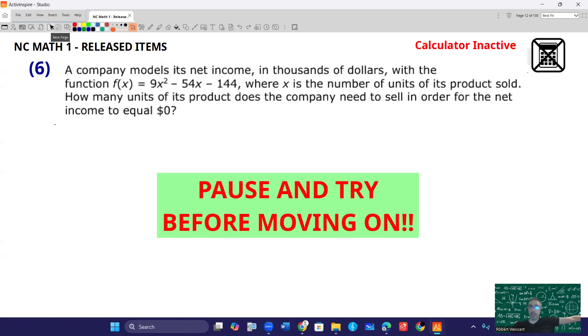A company models its net income in thousands of dollars with the function f(x) = 9x² - 54x - 144, where x is the number of units of its product sold. How many units of its product does the company need to sell in order for the net income to equal zero?